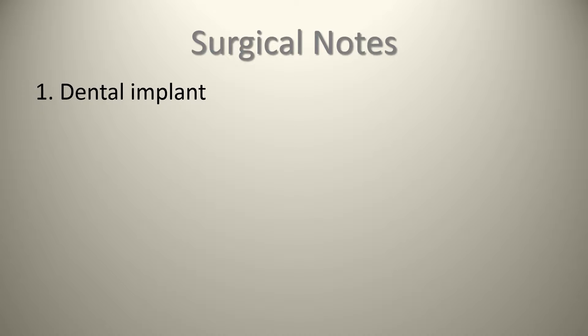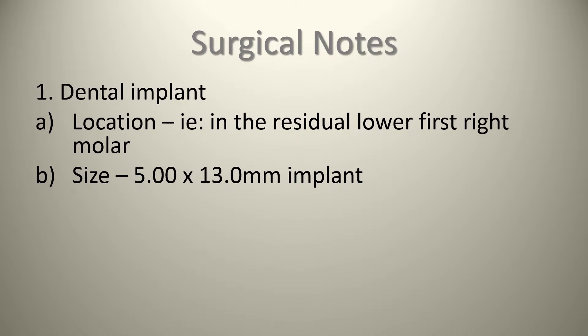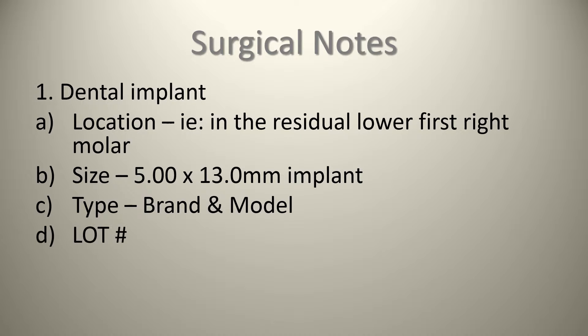In terms of surgical notes, you should write down the brand and type of dental implant used. Document: (A) the location, for example the residual lower right first molar area; (B) the size, such as a 5.0 mm platform implant by 13 mm in length; (C) the brand and model of implant; (D) the lot number; and it's recommended to list the expiration date as well for good cross-referencing of the actual implant used.